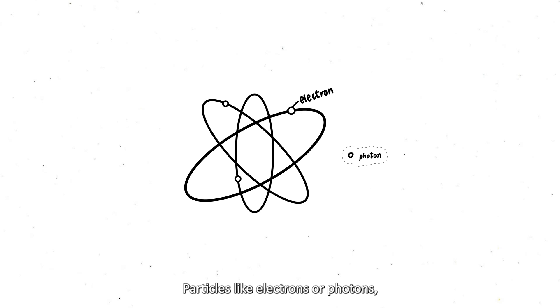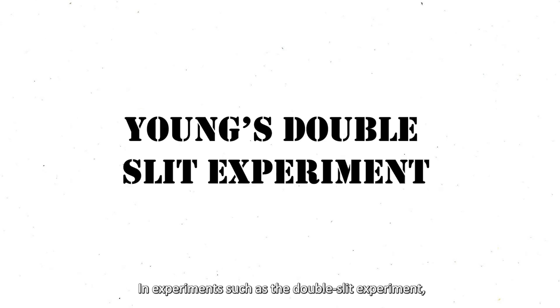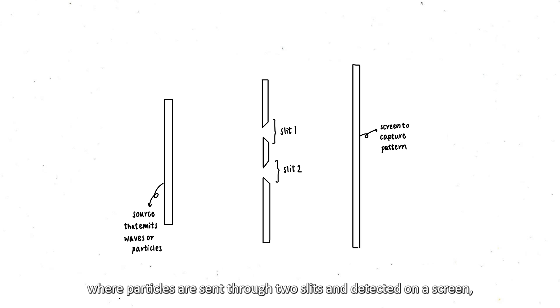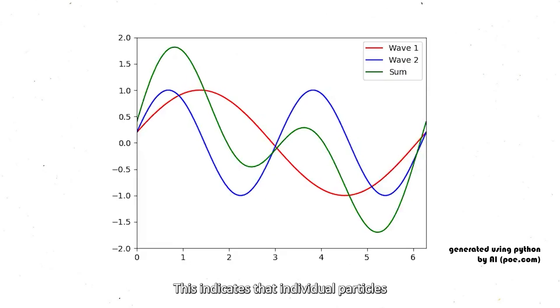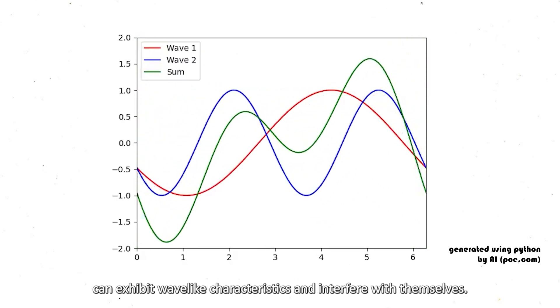Particles like electrons or photons, although traditionally considered as discrete entities, can also display interference effects. In experiments such as the double-slit experiment, where particles are sent through two slits and detected on the screen, interference patterns can be observed. This indicates that individual particles can exhibit wave-like characteristics and interfere with themselves.